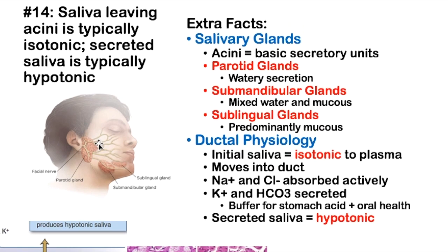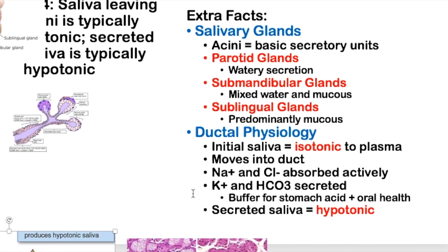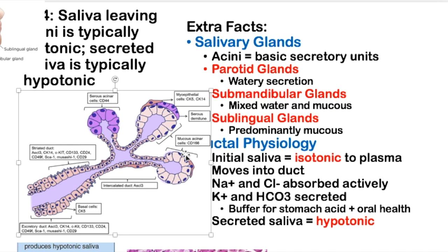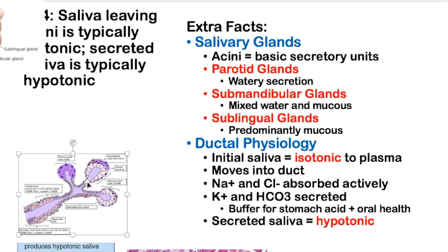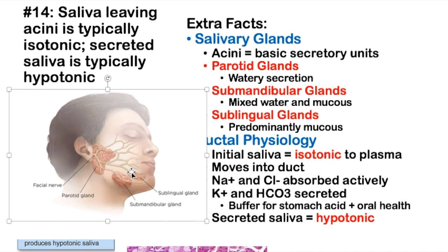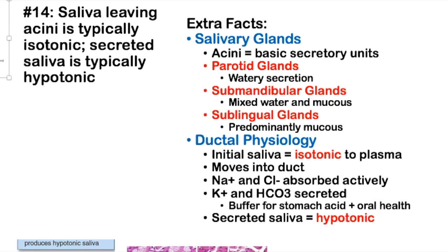Fact 14. Saliva leaving the acini is typically isotonic. Secreted saliva is typically hypotonic. The acini are the basic secretory units. Looking at an image of a salivary gland, we can see that the acini in the back are the serous type — serous acini are typically more watery. You see a lot of this in the parotid gland, while mucinous acini are typically higher in mucus, seen more in the sublingual gland. The fluid is released and travels down the duct, where there will be some absorption and secretion of ions. The three major glands are the parotid gland — through which the facial nerve runs — the sublingual gland underneath the tongue, and the submandibular gland.